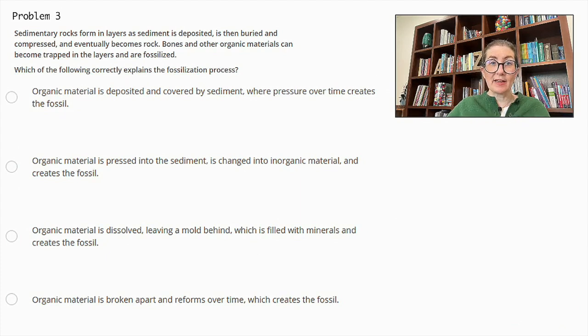Sedimentary rocks form in layers as sediment is deposited, is then buried and compressed, and eventually becomes rock. Bones and other organic materials can become trapped in the layers and are fossilized. Which of the following correctly explains the fossilization process? Organic material is deposited and covered by sediment, where pressure over time creates the fossil. Organic material is pressed into the sediment, is changed into inorganic material, and creates the fossil. Organic material is dissolved, leaving a mold behind, which is filled with minerals and creates the fossil. Or, organic material is broken apart and reforms over time, which creates the fossil.